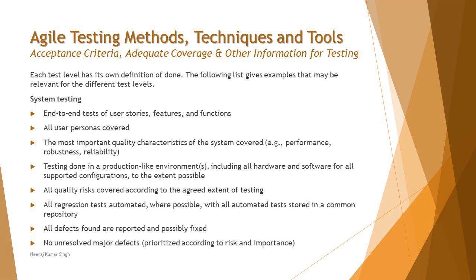When talking about system testing, we have a different definition of done as well. End-to-end testing of user stories, features, and functions — system testing addresses the end-to-end testing of a product. All user personas are covered from the end-user perspective. The most important quality characteristics of the system are covered. Testing is done in a production-like environment including all hardware and software for all supported configurations to the extent possible. All quality risks are covered according to the agreed extent of testing, and all regression tests are automated where possible with all automated tests stored in a common repository. All defects found are reported and possibly fixed within the given timeline, and no unresolved major defects should pass on to another level.